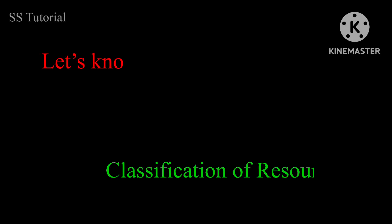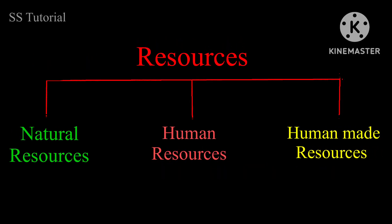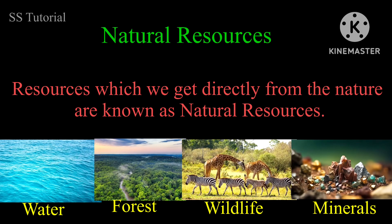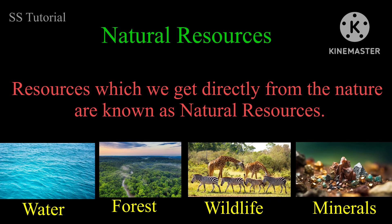Now let's know the classification of resources. Resources can be broadly classified into three types: natural resources, human resources, and human-made resources. Resources which we get directly from nature are called natural resources. Water, forest, wildlife, and minerals are all obtained directly from nature.